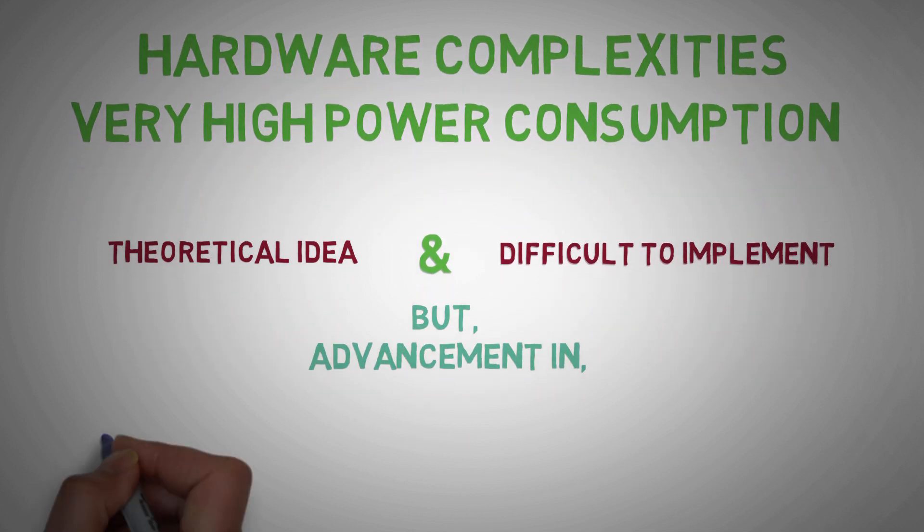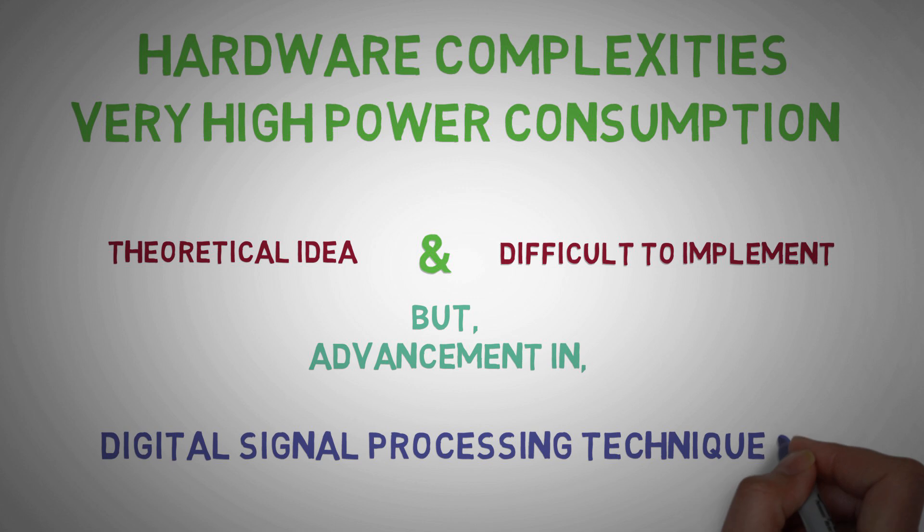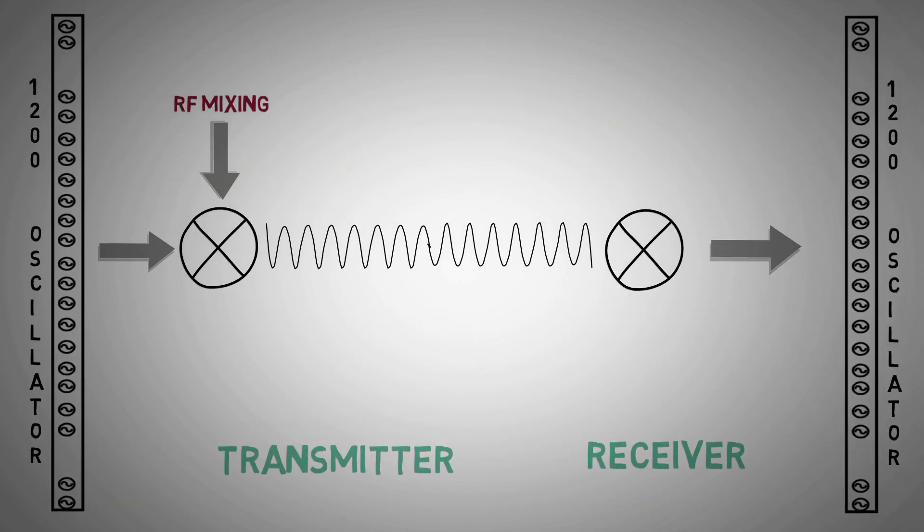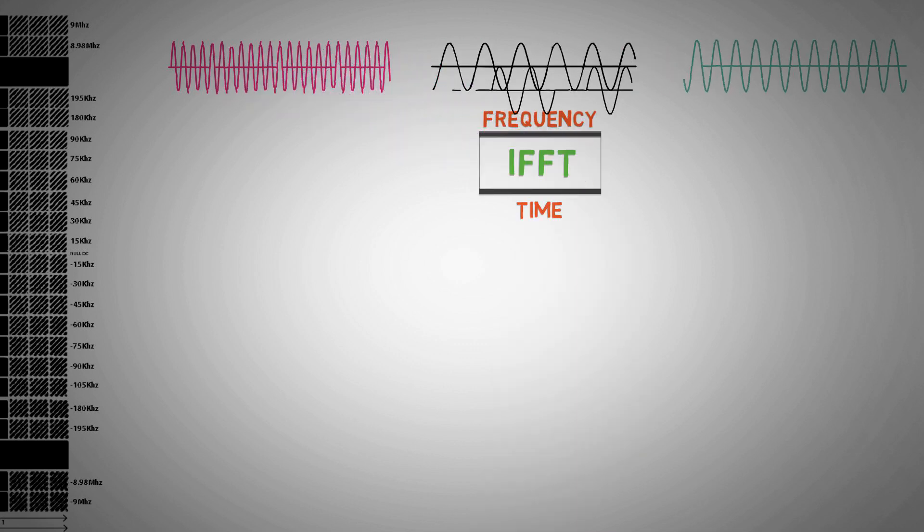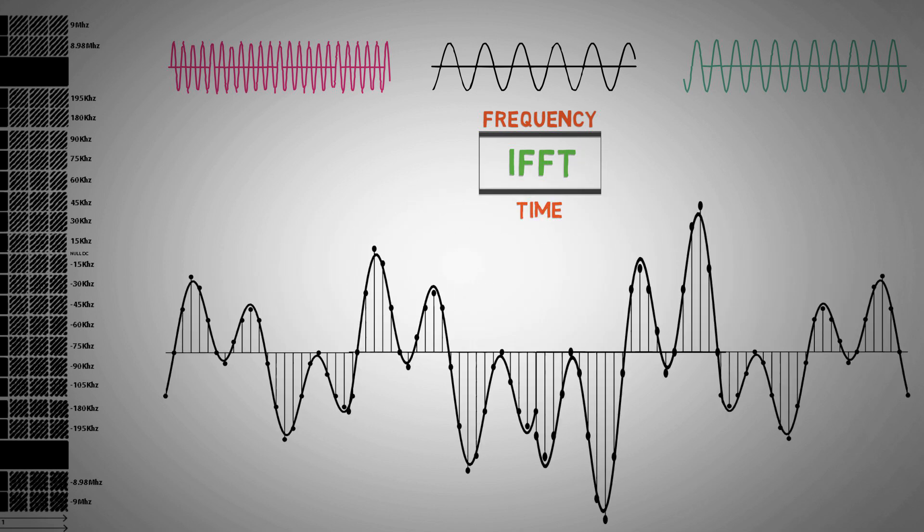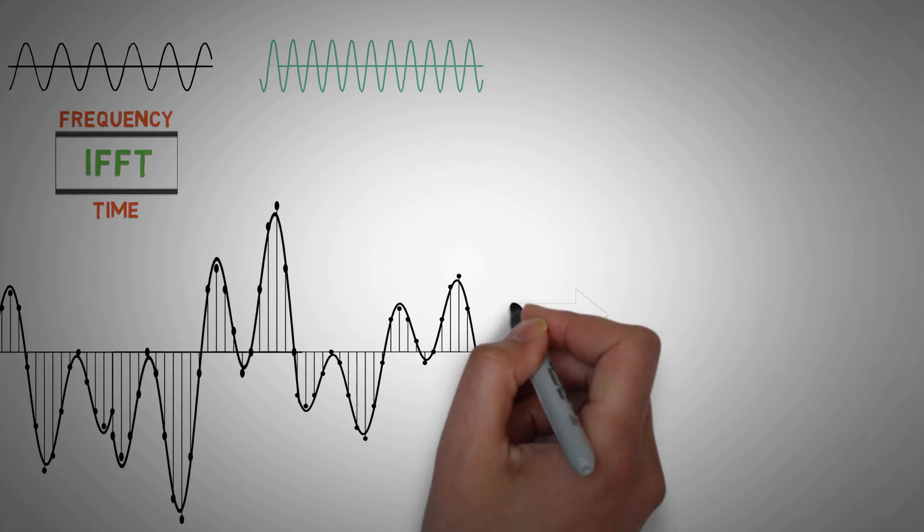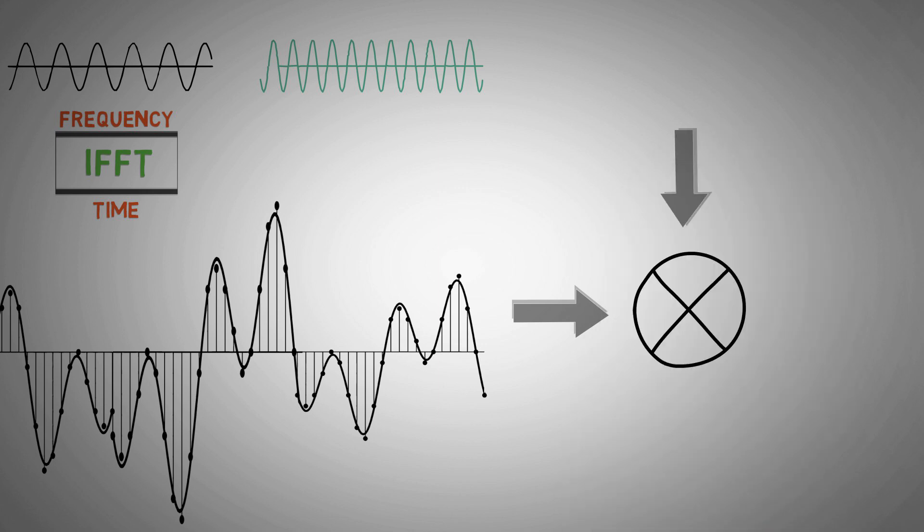OFDM was made reality with the advent of digital signal processing techniques. So, instead of using 1200 oscillators, IFFT solves this problem by converting the parallel frequency domain signals into samples of a composite time domain signal, which are much easier to generate at transmitter side.